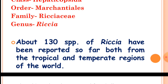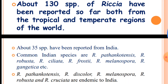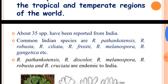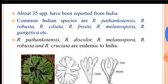There are about 130 species of Riccia which have been reported so far, both from the tropical and temperate regions of the world. About 35 species have been reported from India. Common Indian species are Riccia pathankotensis, Riccia robusta, Riccia ciliata, Riccia frostii, Riccia melanospora, Riccia gangetica, etc.